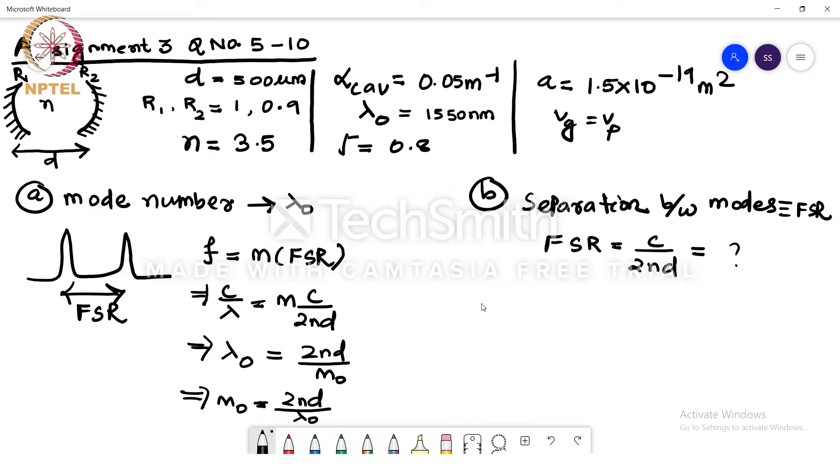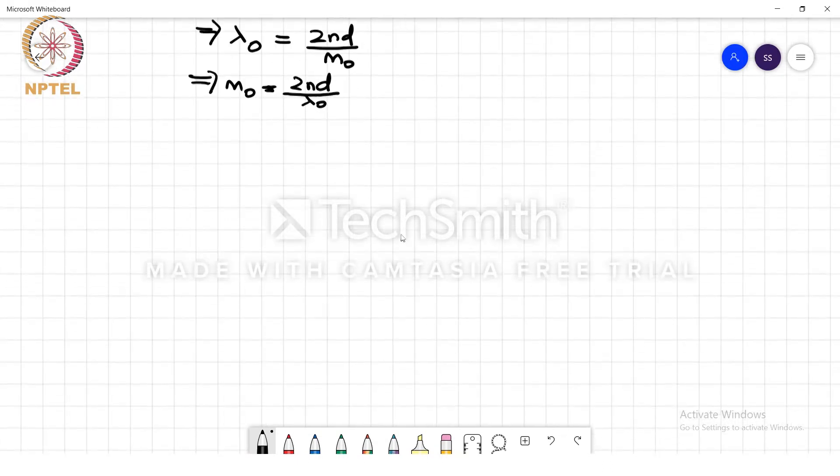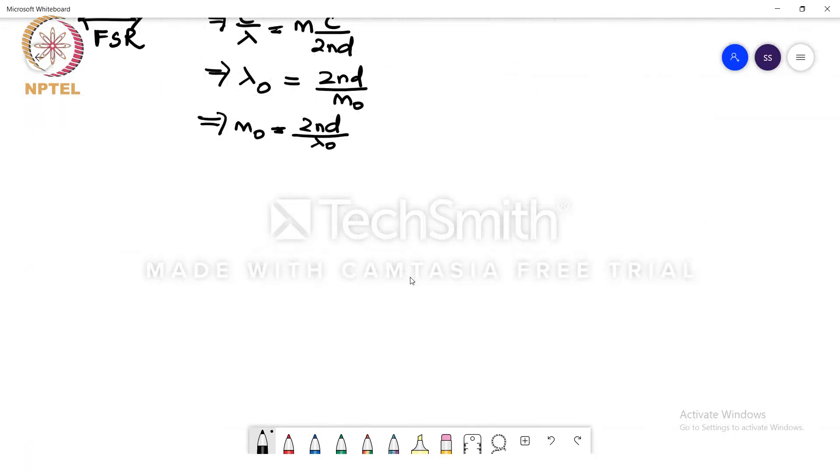Moving on to part C of the question, so we need to find the threshold gain in case of part C. So we know that for sustained modes we need to have the gain equal to the loss of the cavity, which is the total loss, alpha of the cavity, and it will be a summation of two components.